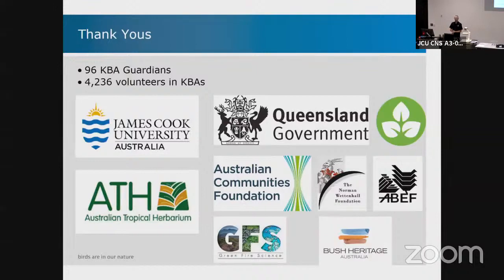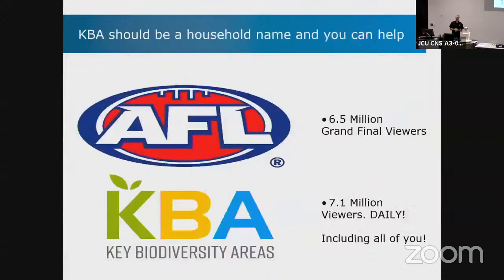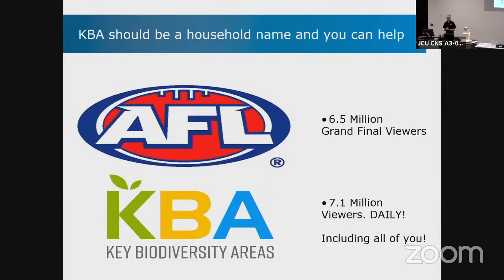It's late on a Wednesday, and one thing I want to achieve before this talk comes to an end is that you're going to be some of the people I don't have to say 'key biodiversity area' to anymore — you'll know what a KBA is. I'd like it to be like AFL: Australian Football League — no one says the full name. There are about 7 million viewers in Australia daily. You've looked at a key biodiversity area today, so I think we can really achieve something.